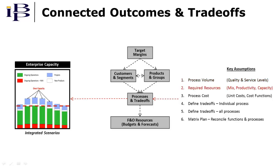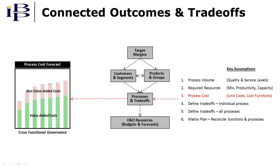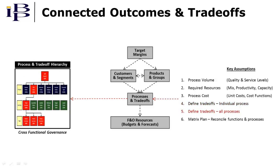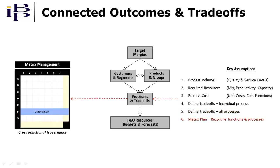Required resources and capacity constraints are quantified by the model, given assumptions about mix, productivity, and capacity. Business process costs are calculated with the option of separating value-added and non-value-added costs. Targets for trade-off metrics are then defined, similar to the order-to-cash example shown on the left — this was addressed in a separate video called cross-functional governance. Similar trade-offs are defined for all processes comprising the order-to-cash process and others, as illustrated by the process and trade-off hierarchy. Functional and business process costs are reconciled for all parts of an organization, providing the means to explicitly connect inputs and outputs, as illustrated by the matrix management graphic on the left.